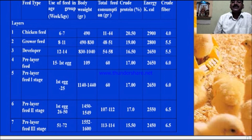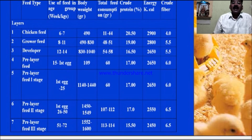Feed quantity depends on the size of the chick and body weight. The protein level is higher at the earlier stage, particularly the chicken starter stage. Gradually, protein levels become lesser, particularly at the pre-layer third stage. This table shows 20.5 percent protein at the earlier stage and 15.5 percent at larger chicks.